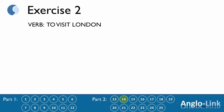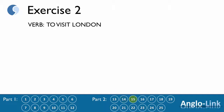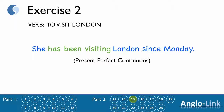Number 14: 'She ___ London several times in the past.' Answer: 'She has visited London several times in the past.' Present perfect. Number 15: 'She ___ London since Monday.' Answer: 'She has been visiting London since Monday.' Present perfect continuous.